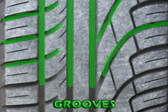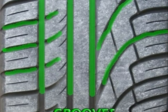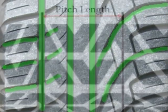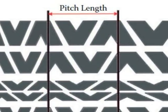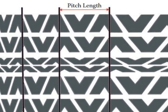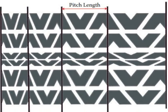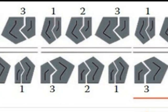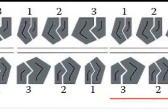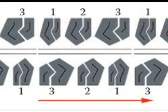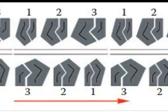Grooves are deep channels cut into the tread design that run either circumferentially or laterally. Pitch length is the circumferential length allotted for a tread block. Pitch sequence, or noise treatment, is the mixed arrangement of tread blocks of varied pitch lengths to reduce tire noise.